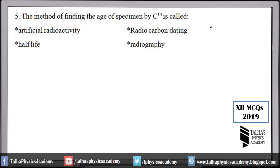Number 5 (second set): The method of finding the age of a specimen by carbon-14 — this is a very common second-year MCQ. The method by which we determine the age of any specimen using carbon-14 is called radio carbon dating. Since carbon is involved, it is specifically called radio carbon dating.